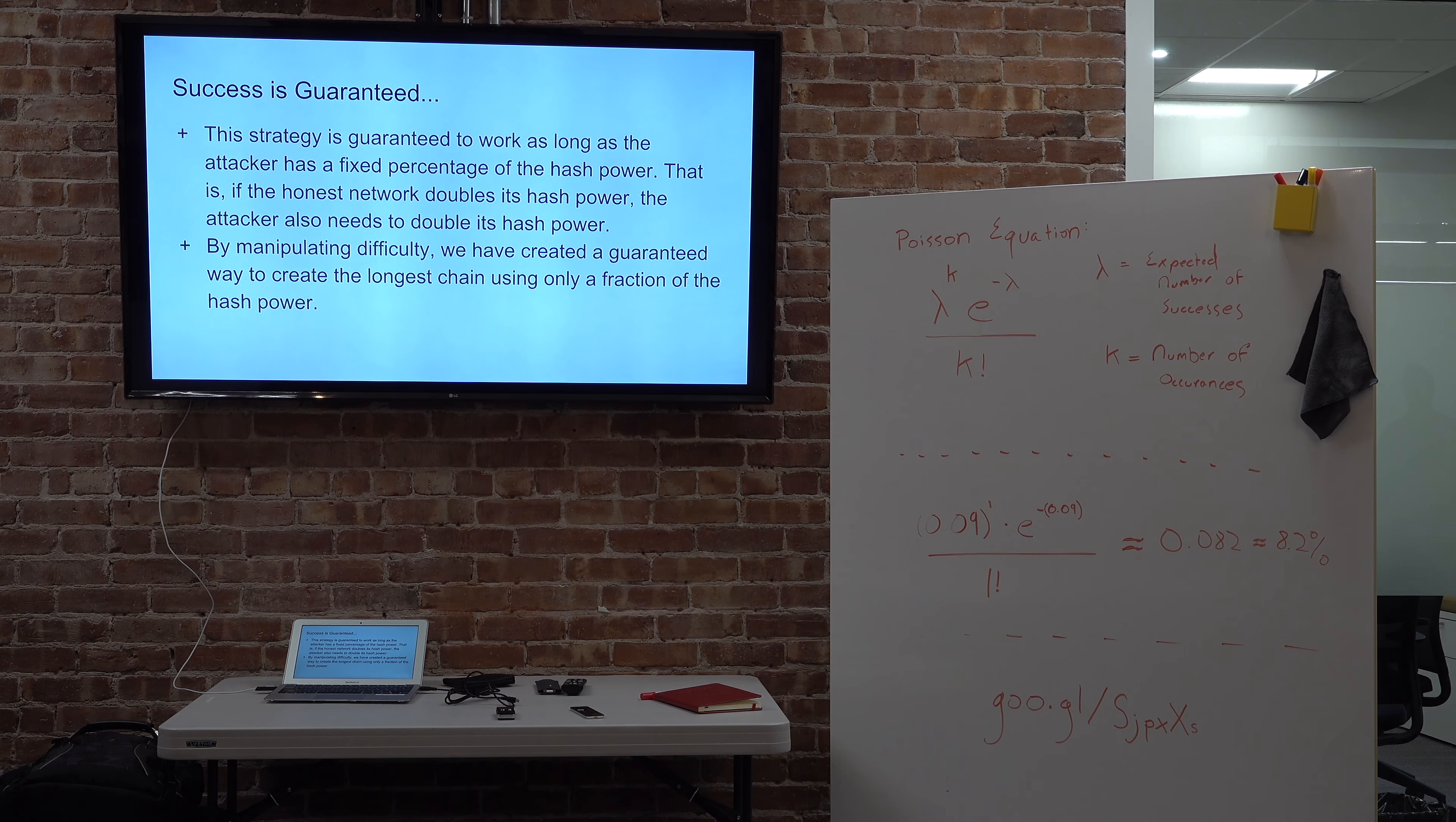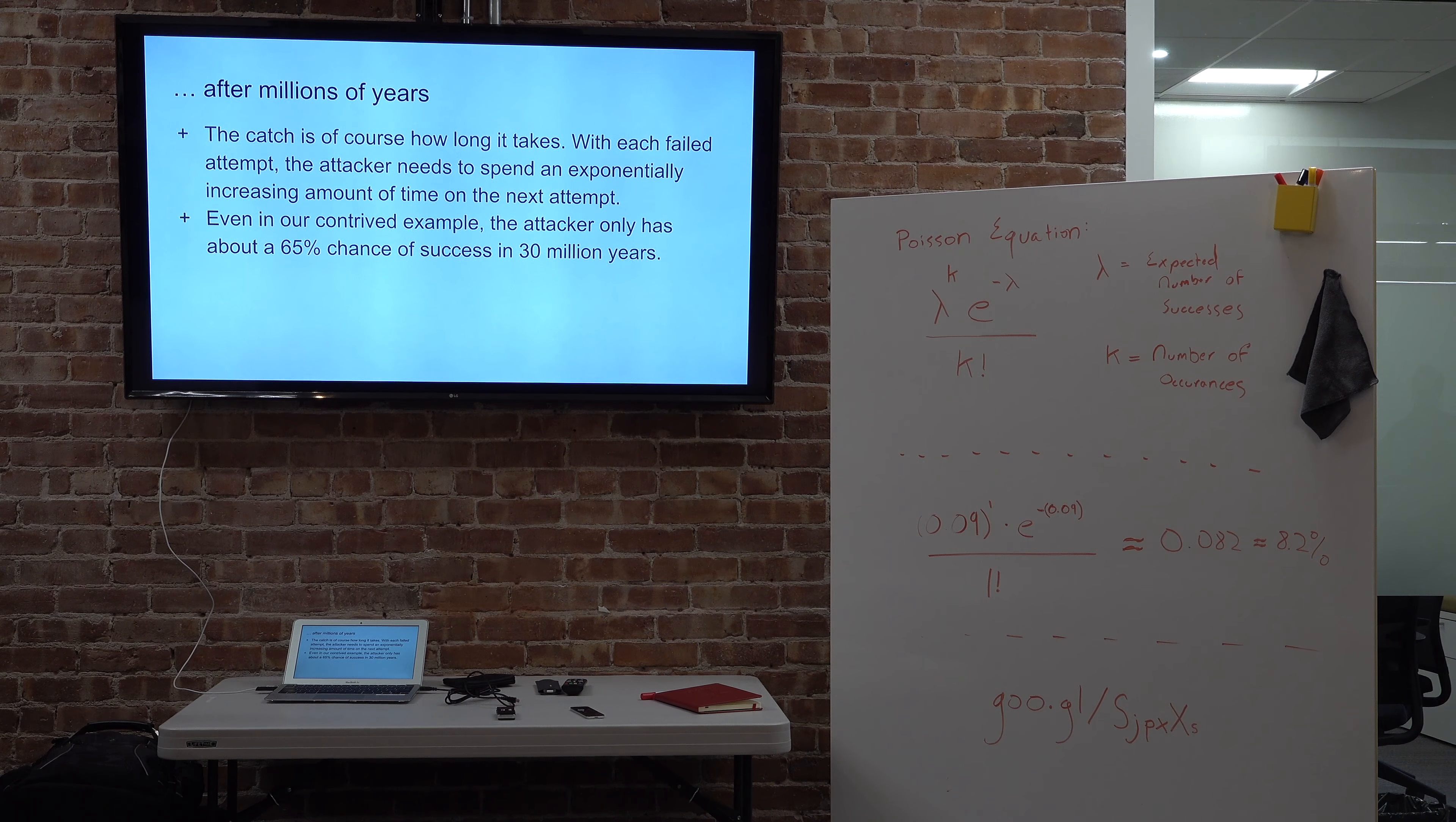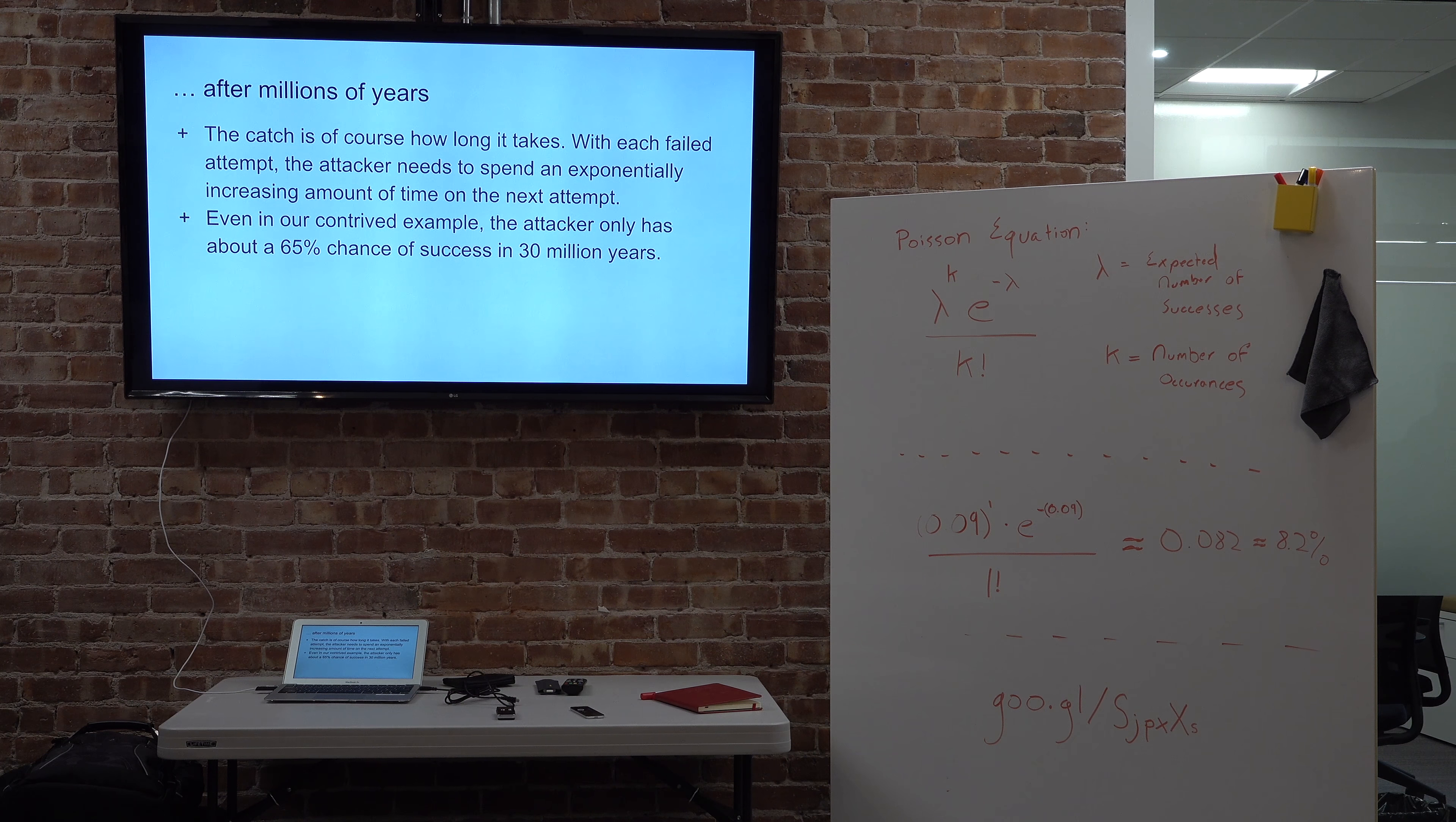And the catch is that it's going to take a long time to pull off this attack. So the first 9% chance took us 100 minutes. The second 8.2% took 1,000 minutes. The next one took 10,000 minutes. And so in expectation, or sorry, if the attacker tries for 30 million years to pull this off, then there's a 65% chance that the attacker will succeed within 30 million years. And of course to get to 80% or whatever, the number just blows up really, really badly. So that's because the attacker's only at 10%. In this contrived example, if the attacker has say 30% of the hash rate, instead of 30 million years, it's a couple of months to get to a greater than 60% chance of success.